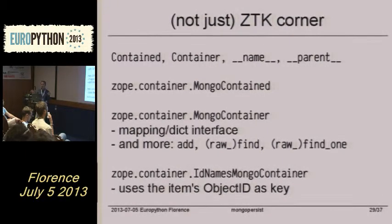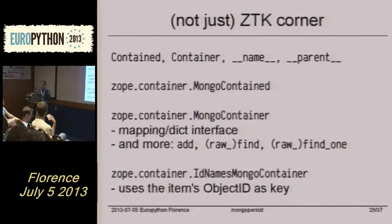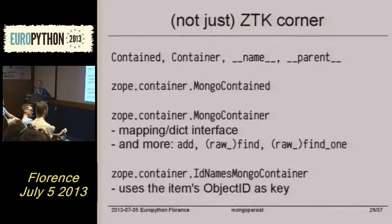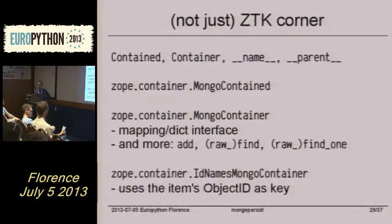If I query Company A, I don't want the persons of Company B. So the container filters the right items it has — it will have only those items in it, and find and find_one will also constrain by adding the right spec to those items.